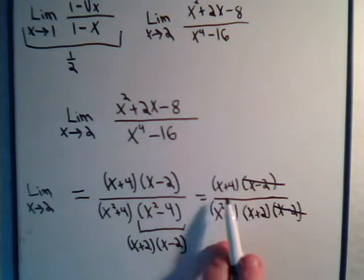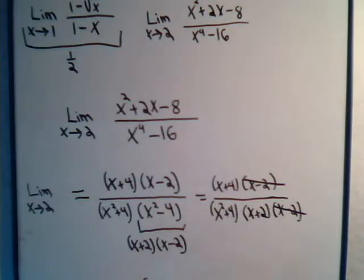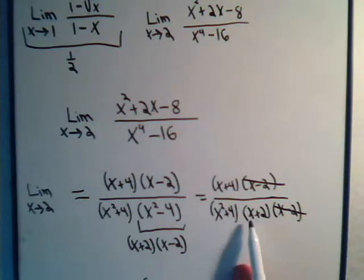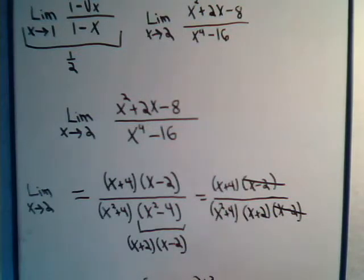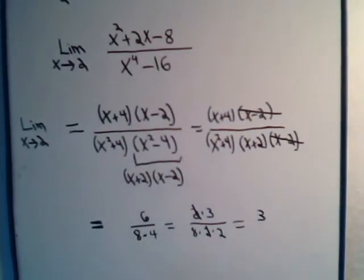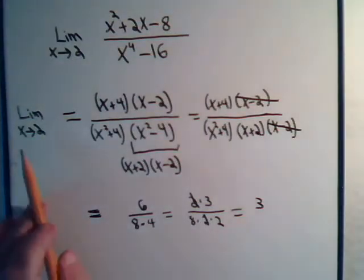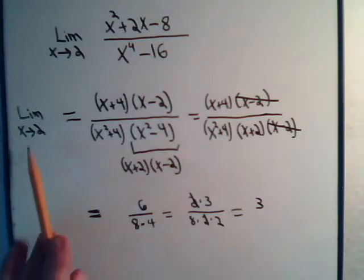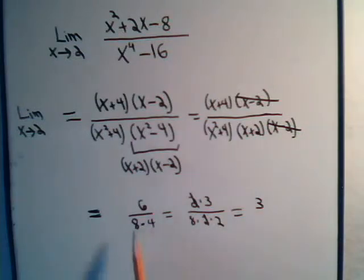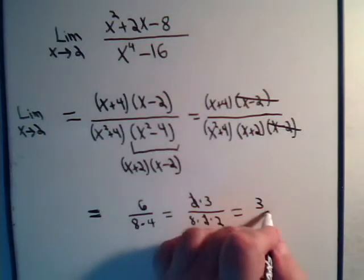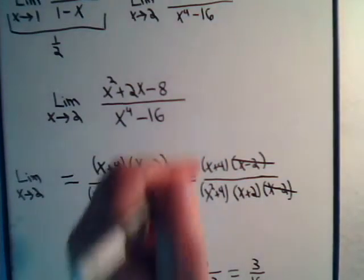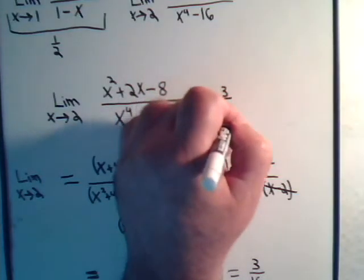Plugging in x equals 2: the numerator is 2 plus 4 equals 6. The denominator is 2 squared plus 4 equals 8, times 2 plus 2 equals 4. So we have 6 over 8 times 4, which is 6 over 32. That simplifies: 6 is 2 times 3 and 32 is 2 times 16, so the 2s cancel, giving us 3 over 16. This limit equals 3 over 16.